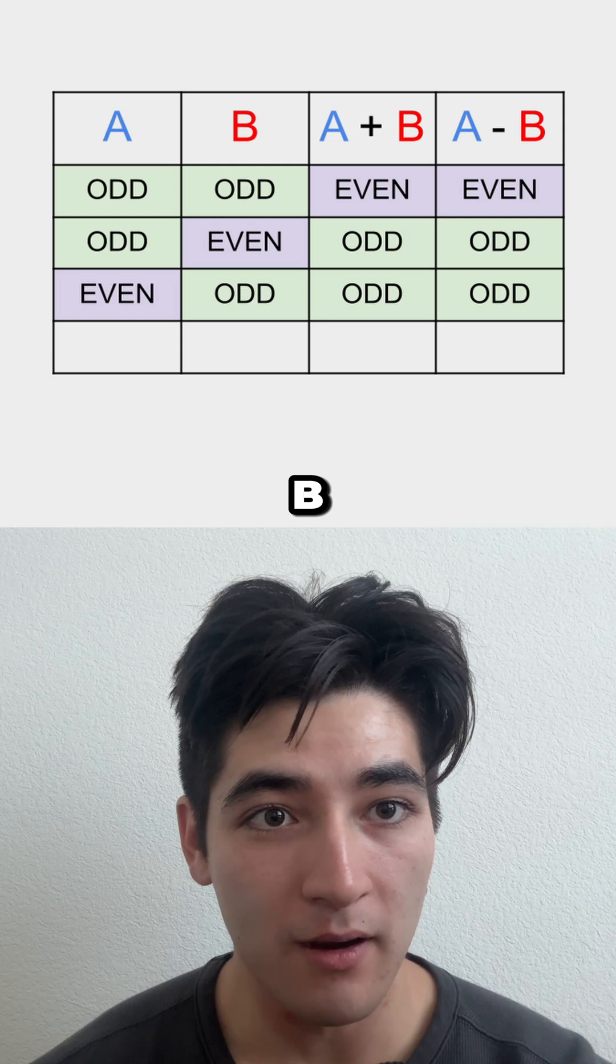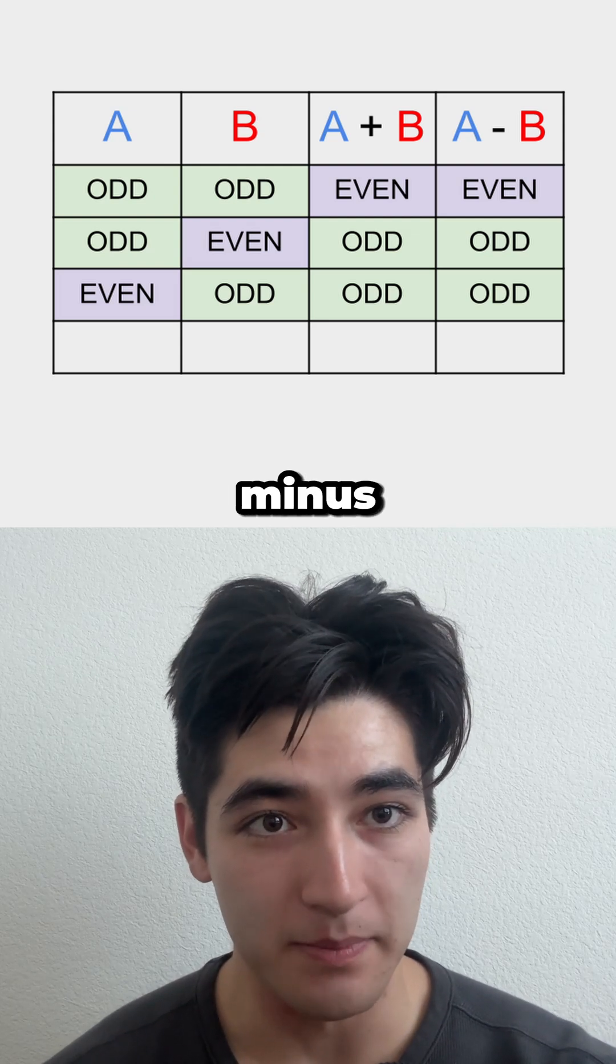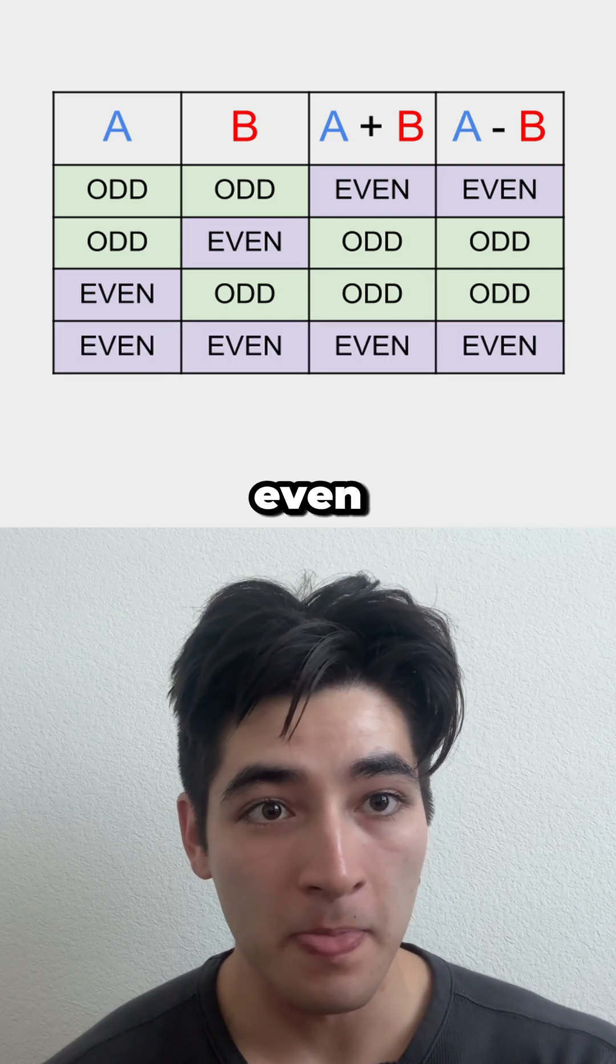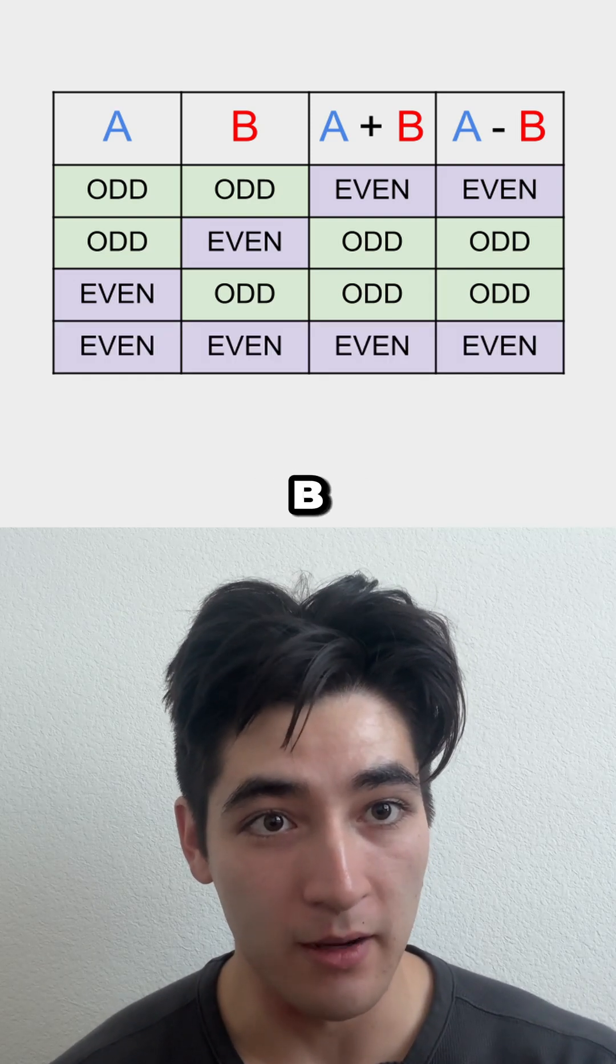If a and b are even-odd, both a plus b and a minus b are odd. And if a and b are even-even, both a plus b and a minus b are even.